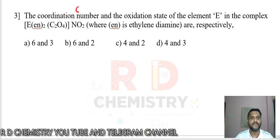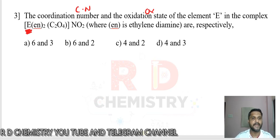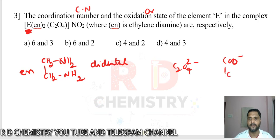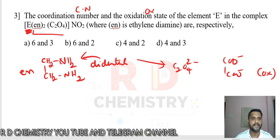Question 3: coordination number CN and oxidation number of element E, the central metal atom. EN stands for ethane-1,2-diamine — a bidentate ligand. C2O4²⁻ (oxalato: COO⁻ and CO⁻) is also a bidentate ligand. So both EN and oxalato are bidentate ligands acting as ligands inside the coordination sphere. Outside the square bracket, the nitrite ion is the counter ion, not a ligand.